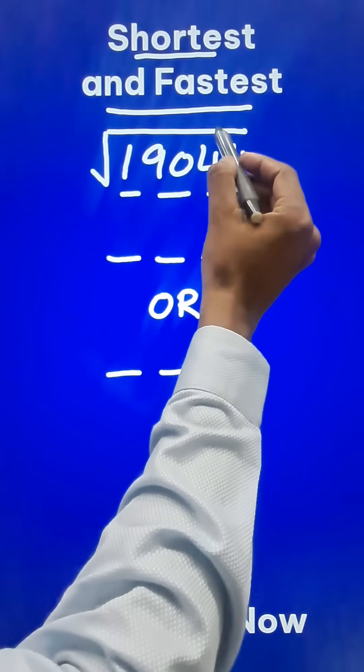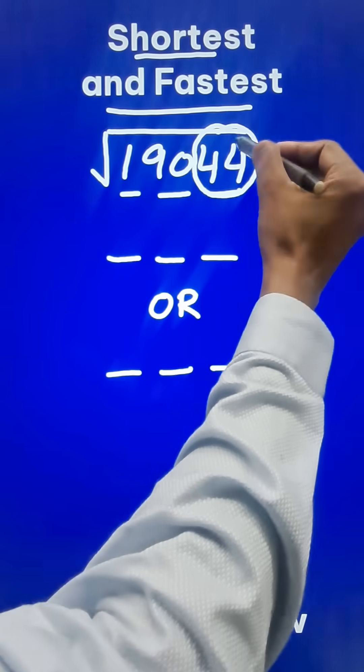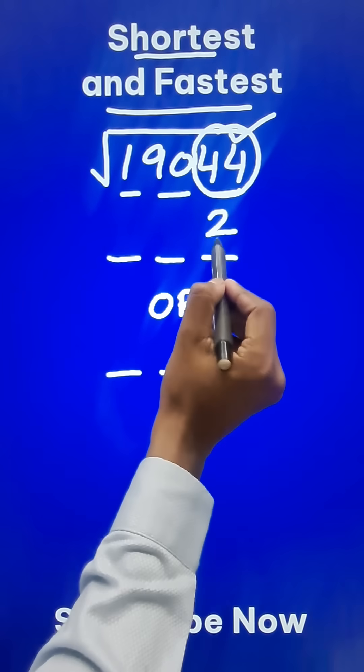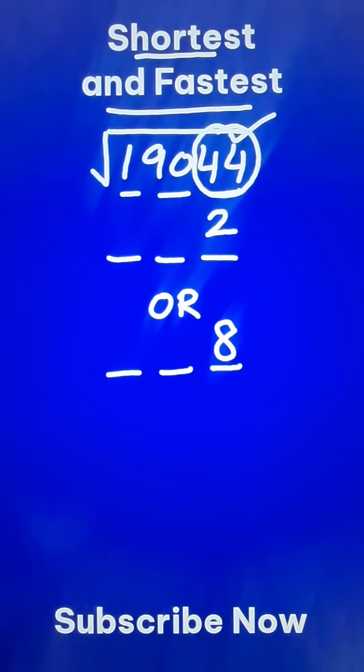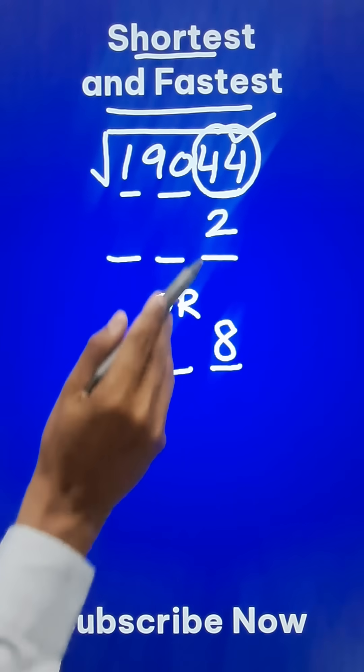Why? Because the last pair 44 ends in 4 and 2 square is 4 which ends in 4 and 8 square is 64 that also ends in 4. So there are two possibilities for the unit digit.